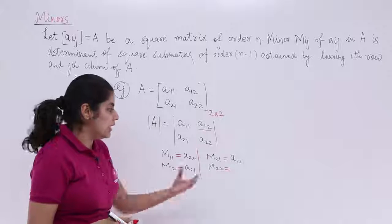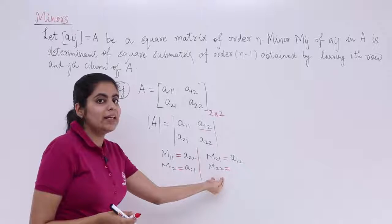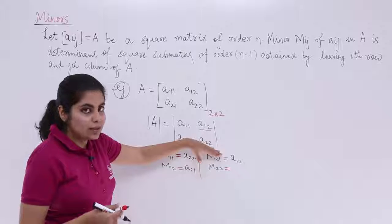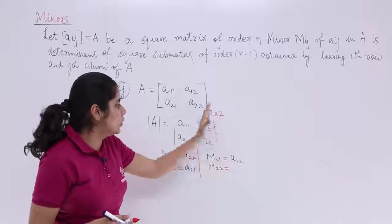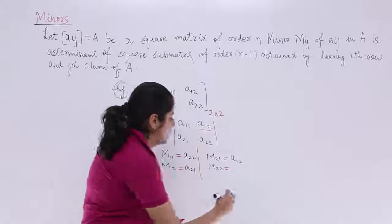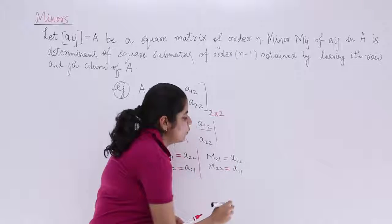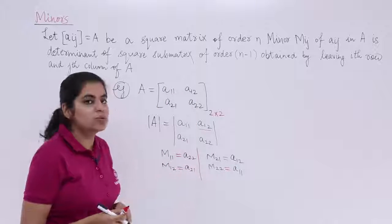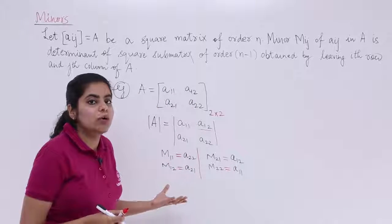And similarly, in the order, you find A22's minor. A22's minor is M22. Leave this row, leave this column. You have A11. This is how you compute minor for a 2x2 matrix and its corresponding determinant.